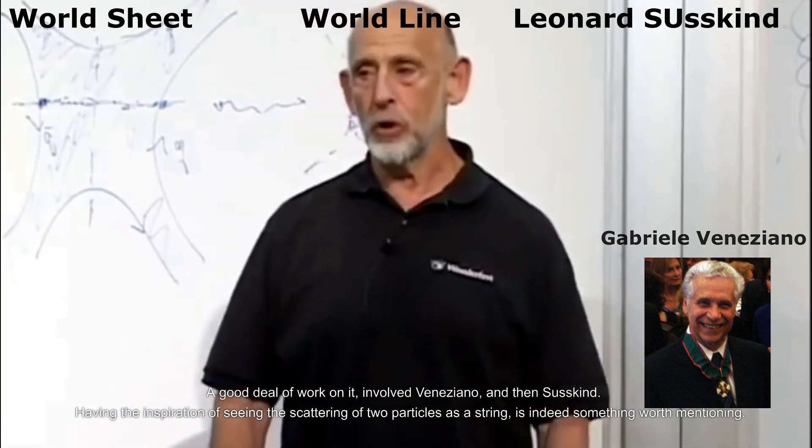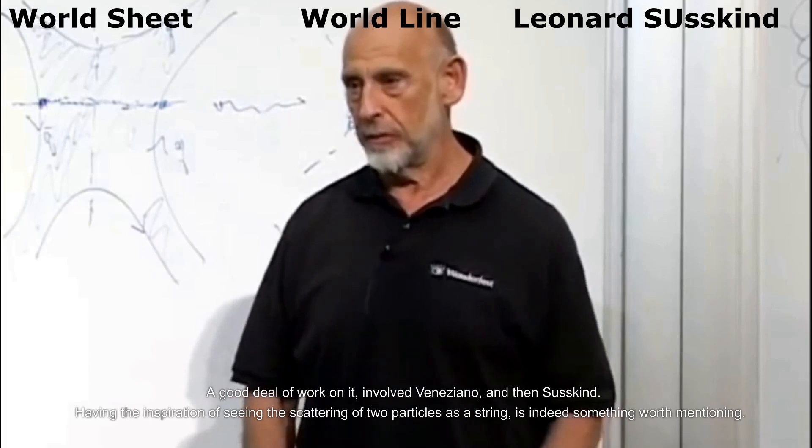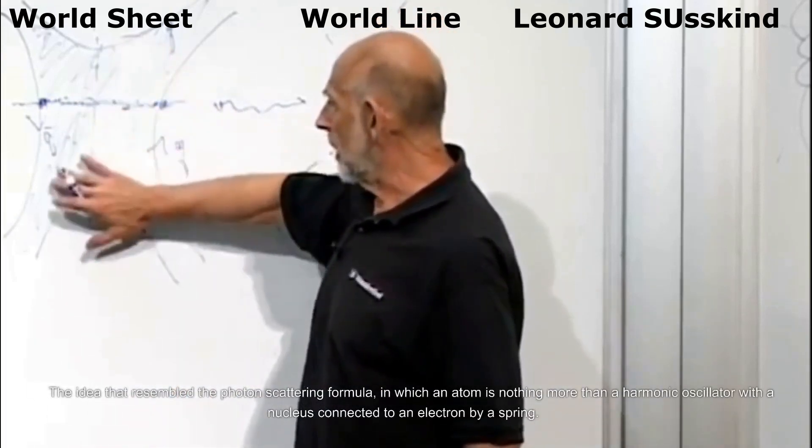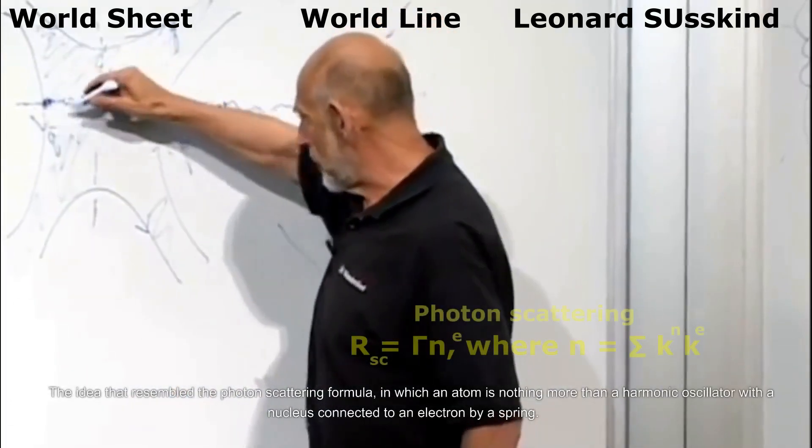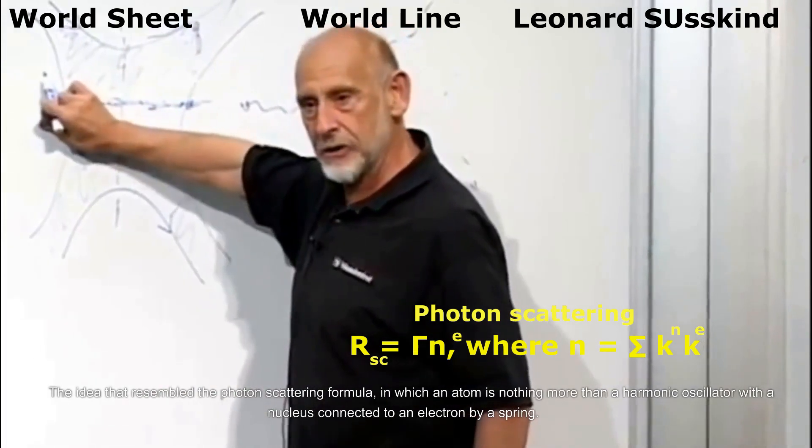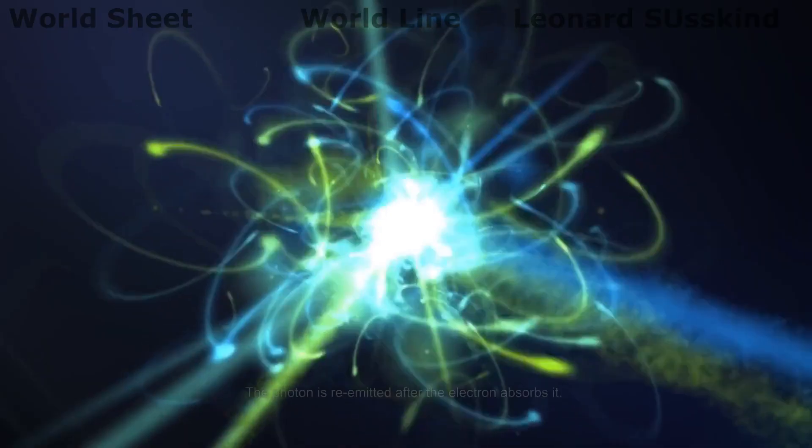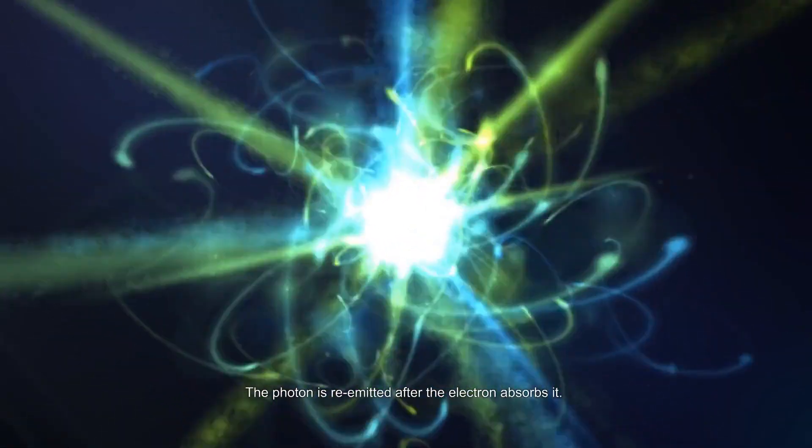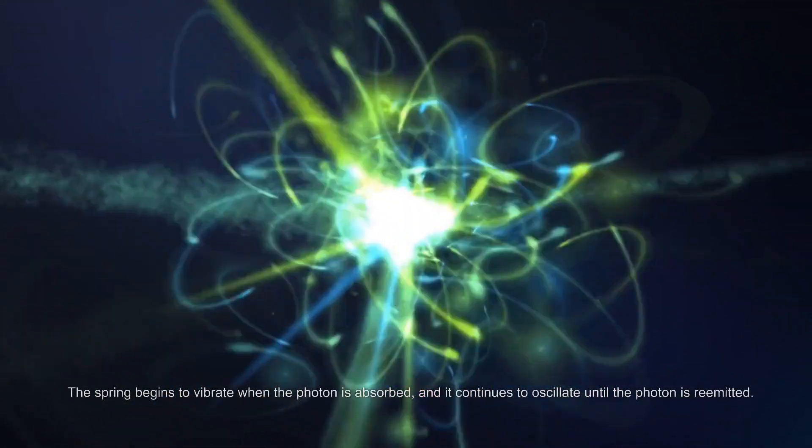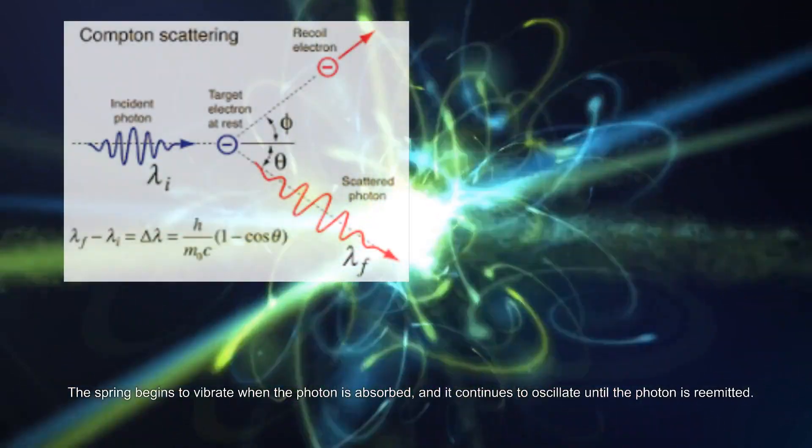A good deal of work on it involved Veneziano and then Susskind having the inspiration of seeing the scattering of two particles as a string, which is indeed something worth mentioning. The idea that resembled the photon scattering formula in which an atom is nothing more than a harmonic oscillator with a nucleus connected to an electron by a spring.